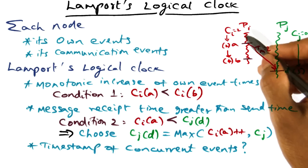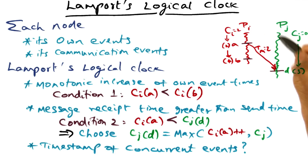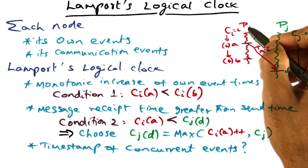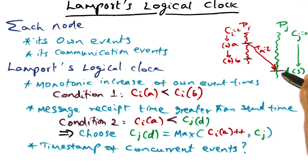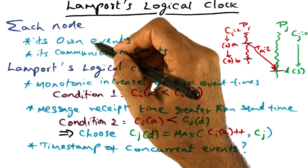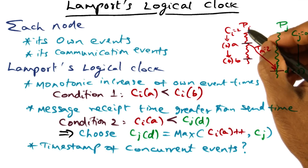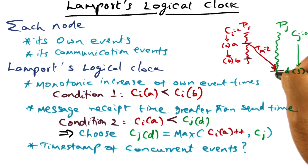For instance, if process PI sends a message to process PJ, that's a send event — PI knows about that. And similarly, PJ, when it gets this event, that's a receive event — it knows about that. So these are the only two kinds of events that every node knows about: its own computational events and its communication events with its peers.